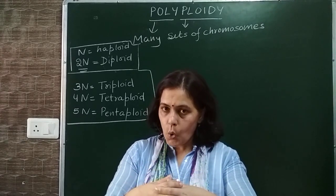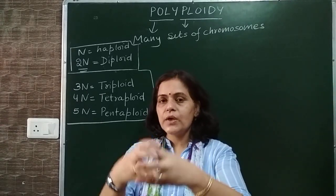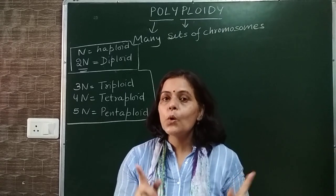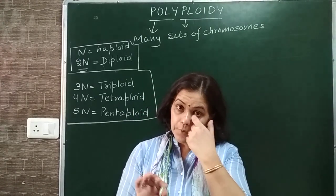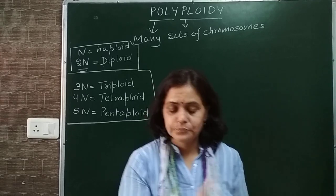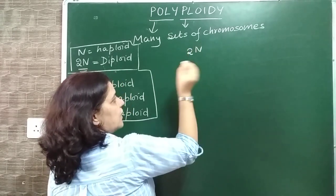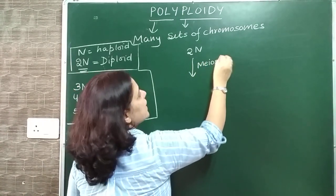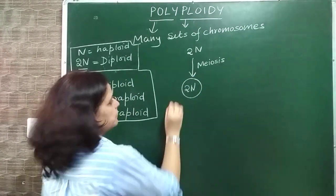Due to non-disjunction, what will happen? The complete sets - both of them - will go to the same gamete. In one gamete, two sets of chromosomes will end up. That gamete will be diploid. Normally, gametes should be haploid. But here, an abnormal diploid gamete is being formed - which is having two sets of chromosomes.